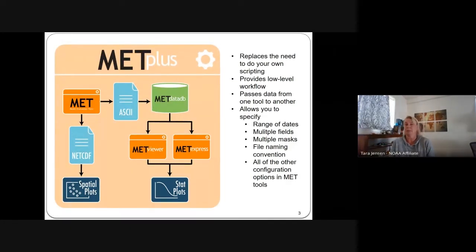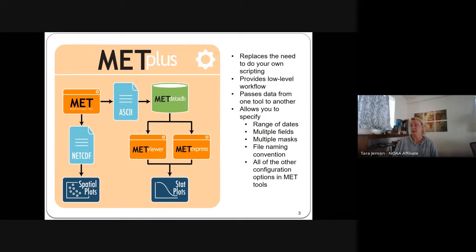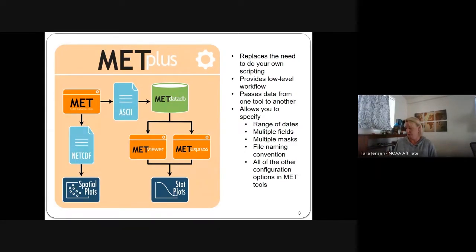METplus, the overarching framework, is a suite of Python wrappers that replaces the need to write your own scripting. It provides low-level workflow for passing data from one tool to another. It allows you to specify the range of dates over which you want to compute statistics, the types of fields you want to evaluate, the number of masks to apply, the file naming conventions for your forecast files, observation files, climatologies, and all other configuration options in each MET tool.